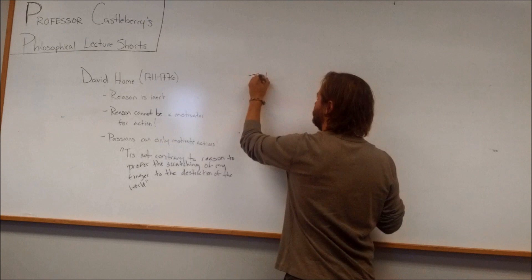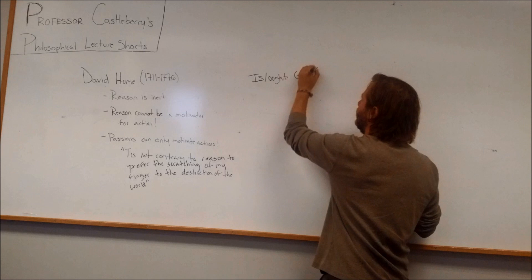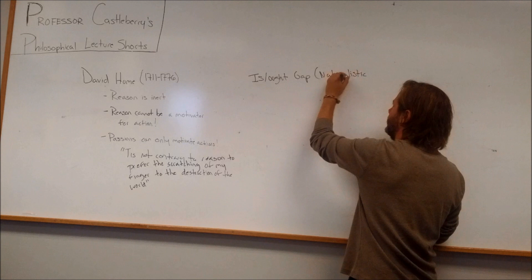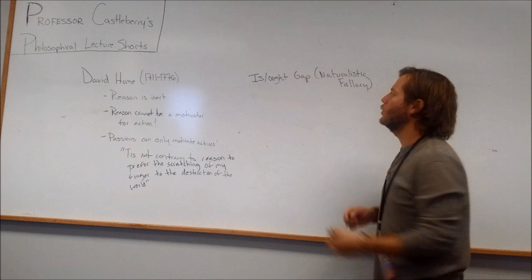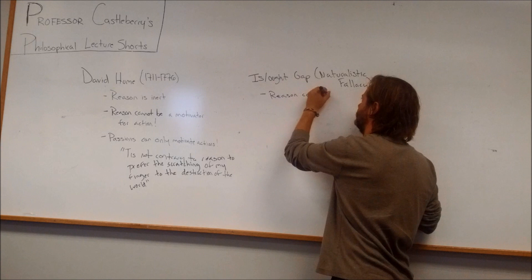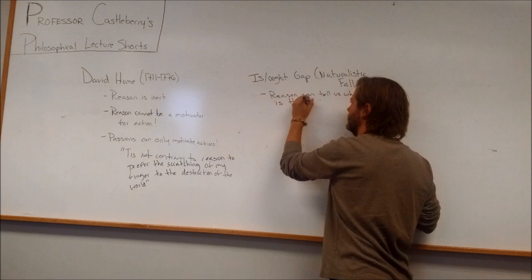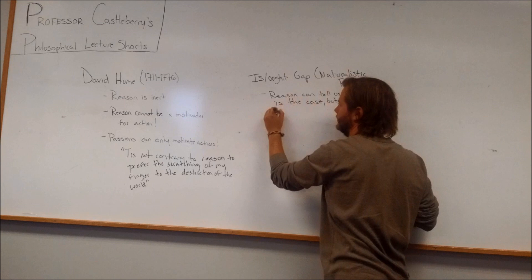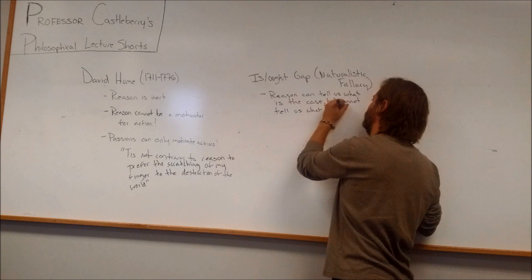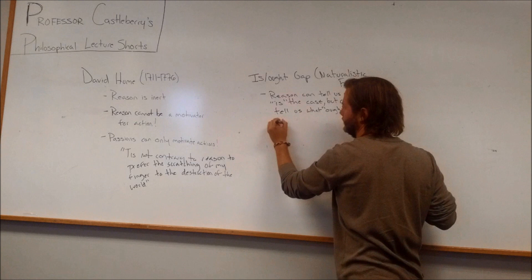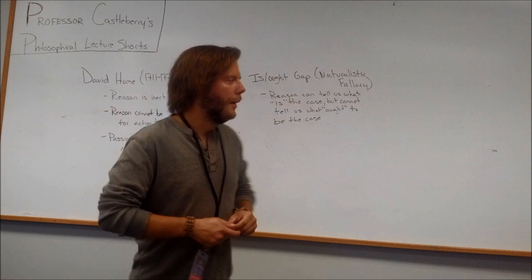Now another way we could put it is, this is how he puts it later, what we call the is-ought gap. So this is another way to say basically the same thing. The is-ought gap, or as G.E. Moore later called it, and is famously known as a naturalistic fallacy. He says reason can tell us what is the case, but cannot tell us what ought to be the case.